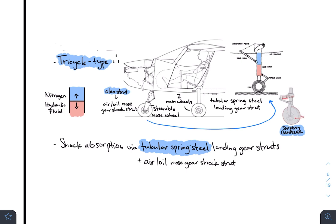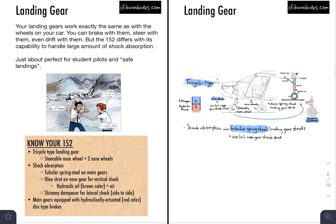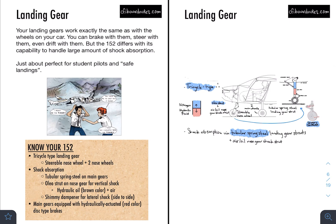So we just went ahead and highlighted it. It's a tricycle-type landing gear. One, two, three. You have the oleo strut over here, which is a combination of hydraulic fluid and nitrogen. You also have the shimmy dampener, which is similar, but instead of going up and down, it goes left and right. That's the shimmy dampener. You also have tubular spring steel for landing gears over this area. And like what we said, nothing too difficult.